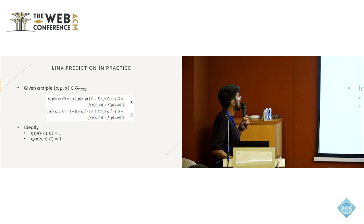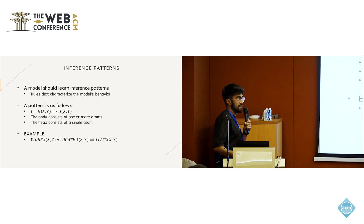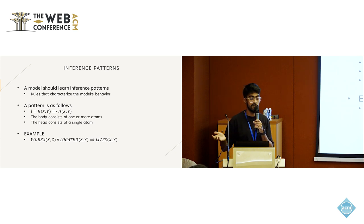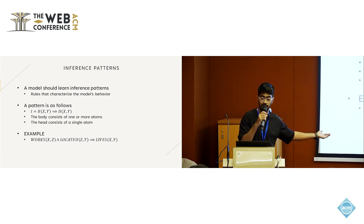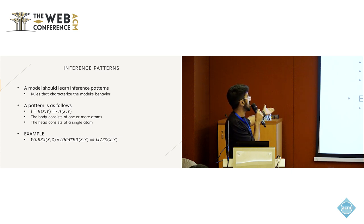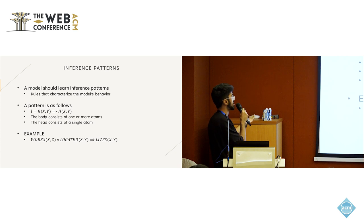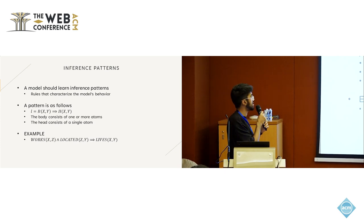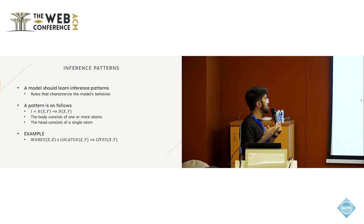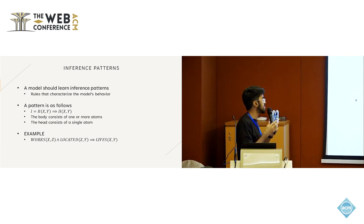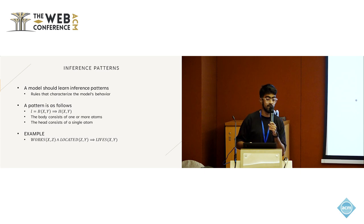Before getting into the main topic, I also want to talk about inference patterns. Inference patterns, also called rules, characterize the behavior of the model, and a knowledge graph embedding model should be able to learn them. An inference pattern has a body and a head — if the body is true, it implies the head is also true. For example, if entity x works at company z, and that company is located in location y, then this implies x lives in y. Understanding how well a model captures such inference patterns is important.